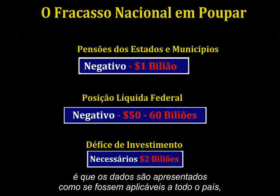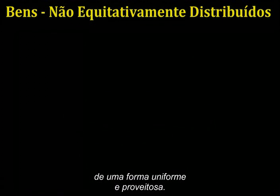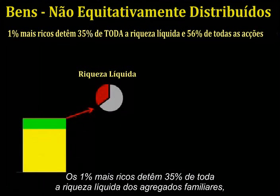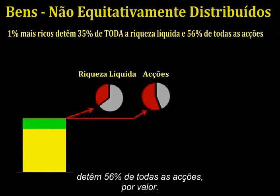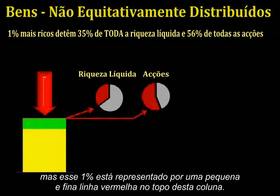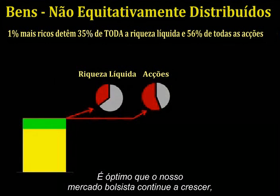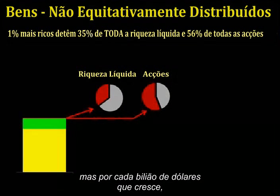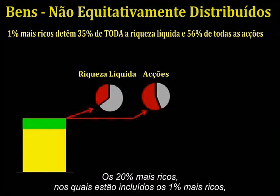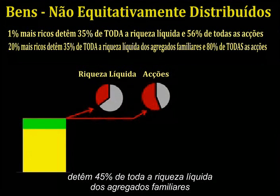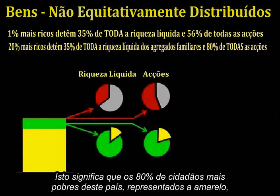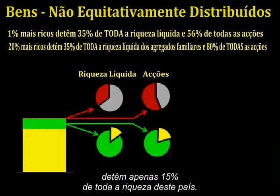The second oversight is that the data is presented as if it applied to our entire country in a fairly even and useful manner — it does not. The top 1% owns 35% of all net household wealth and, looking at stocks only, owns 56% of all stock by value. The top 20%, which includes the top 1%, owns 85% of all household net wealth and 80% of all stocks by value. This means that the bottom 80% of the citizens of this country holds only 15% of the total wealth.